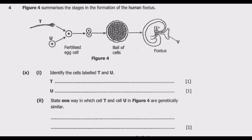Notice the difference between T and U. T has a tail while U does not have a tail. Because T has a tail, T should be the sperm. T is the sperm — the male reproductive cell or gamete. Its main function is to fertilize the ovum. The sperm unites with the ovum, which is the female reproductive gamete, during fertilization, resulting in the formation of a zygote. The sperm carries half of the genetic material needed to form a new individual.